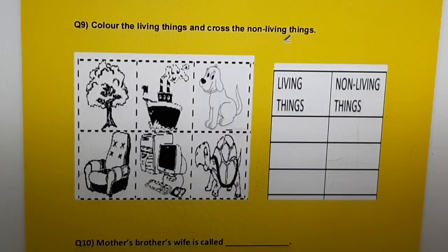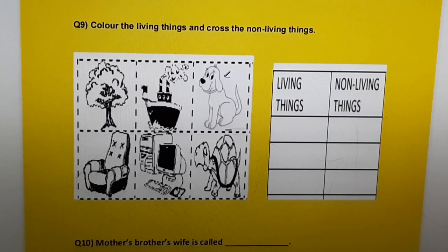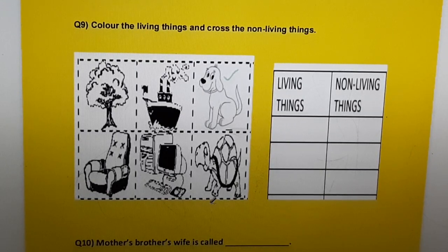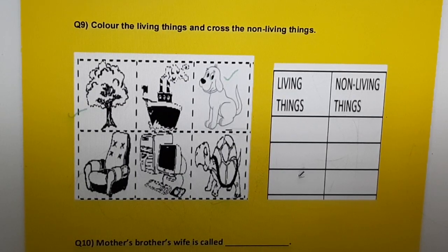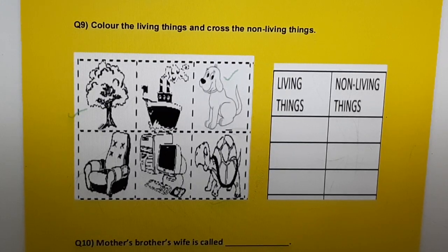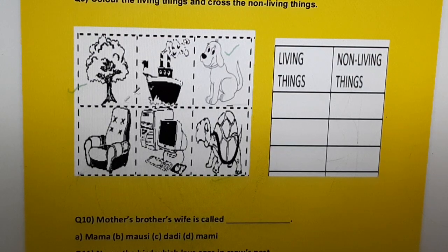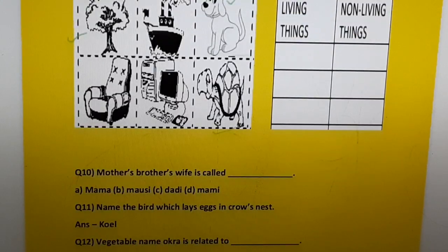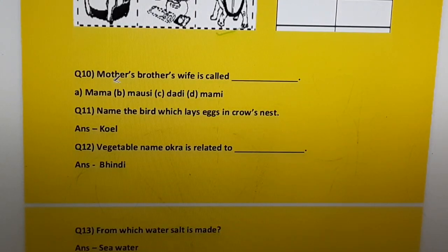Question nine: Color the living things and cross the non-living things. You have to see this picture and color the living things — dog, tortoise, and trees — and cross out the non-living things.